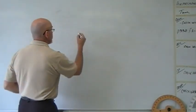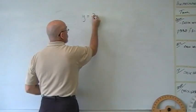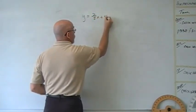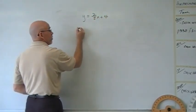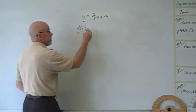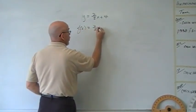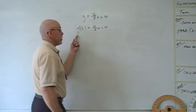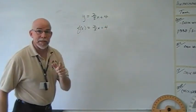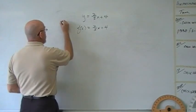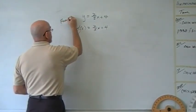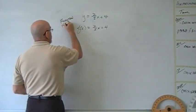So once again, instead of writing things as y equals two-thirds x plus four, all we're doing instead of y, we're writing a function notation. That's the only difference. The graphing of this, the solving for this, all of it remains the same. This is called function notation.